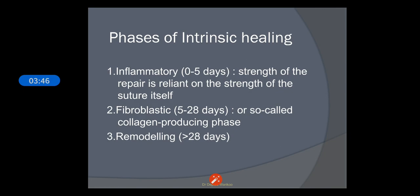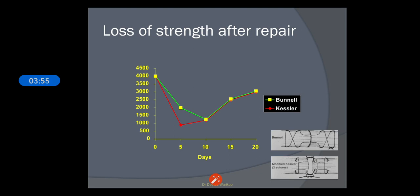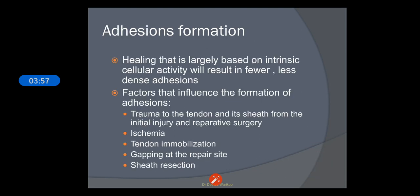There are mainly three phases of healing: first the inflammatory phase, second the fibroblastic phase, and third the remodeling phase. Adhesion formation is very important in this healing process. Healing that is largely based on intrinsic cellular activity will result in fewer and less dense adhesions. Factors which influence the formation of adhesions include trauma, ischemia, tendon immobilization, gapping at the repair site, and sheath resection.